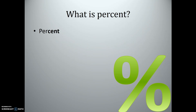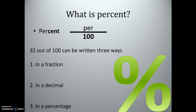So what is a percent? Percent literally means 'per cent.' The fraction bar means 'per,' 'out of,' or 'divided by,' so 'per cent' means per 100. Cent means 100 — you guys remember that from Latin. So if we were to say 32 out of 100 — notice that 'out of' wording, which means a division bar — 32 out of 100 can be written three different ways.